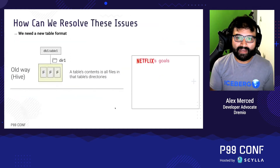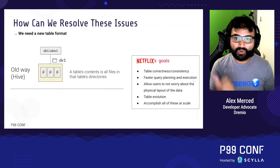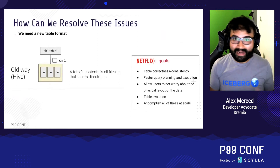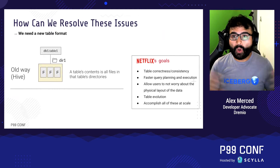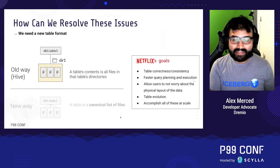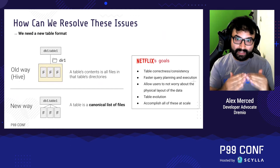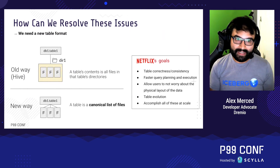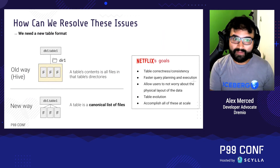So we needed something better. Netflix was running into these issues with Hive and started looking for a new way to solve for issues like table correctness, faster query planning, allowing users to not have to worry about how the table is engineered, letting the table evolve — changing its schema and partitioning when needed — and doing all of this at petabyte scale on the data lake. The result was a new approach: instead of saying all the files in this folder are the table, they would simply write a list of which files are in the table, regardless of what folder they're in.